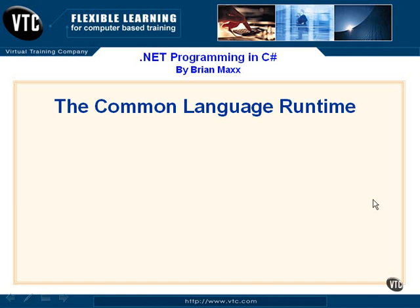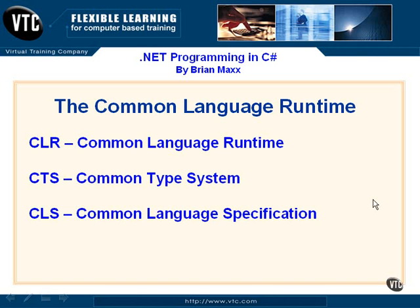Let's go over the common language runtime. The CLR is composed of a couple of things: the common type system (CTS) and the common language specification (CLS). Don't get too wrapped up in the acronyms — it's really just a way to manage our programs, work within a specification for language and types, and describe .NET-enabled languages as either compliant or non-compliant to the common language specification.